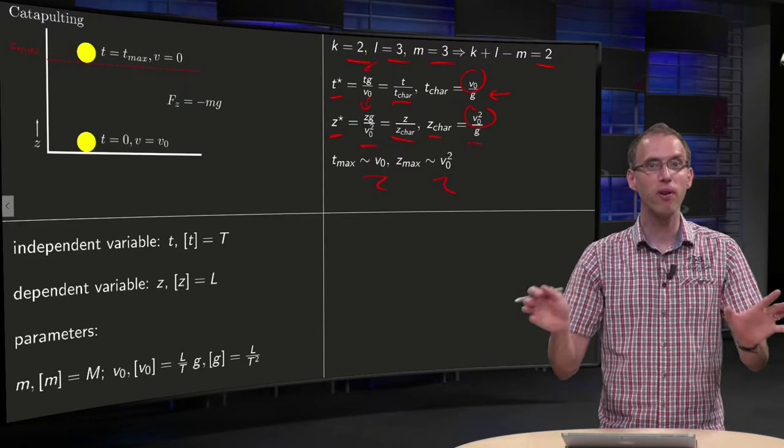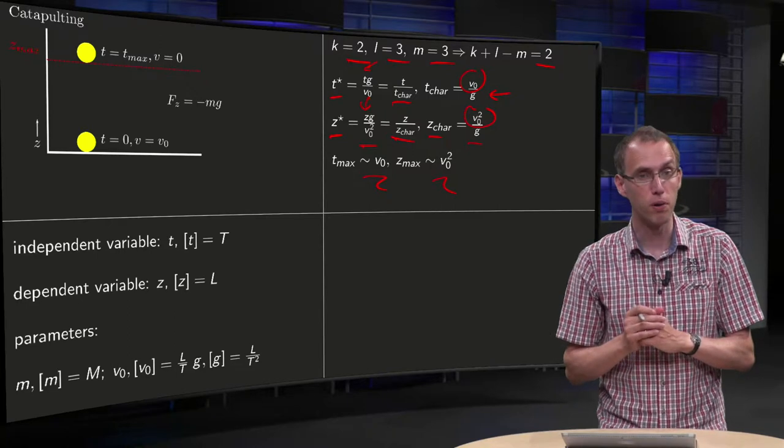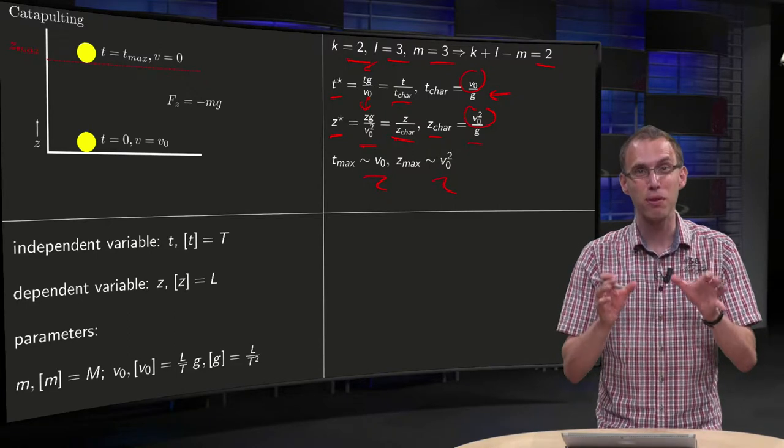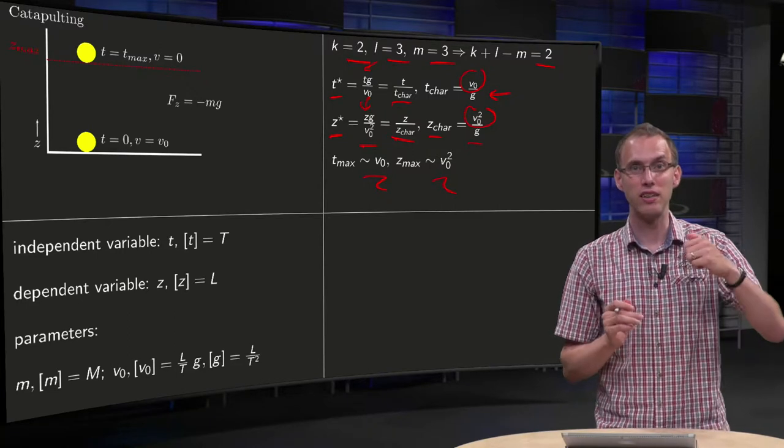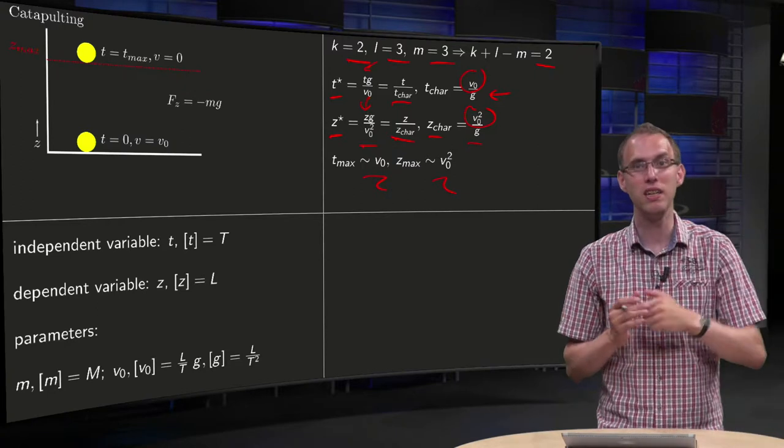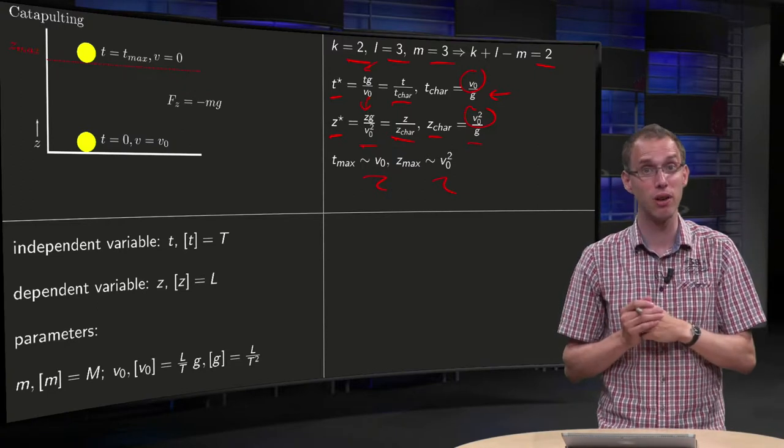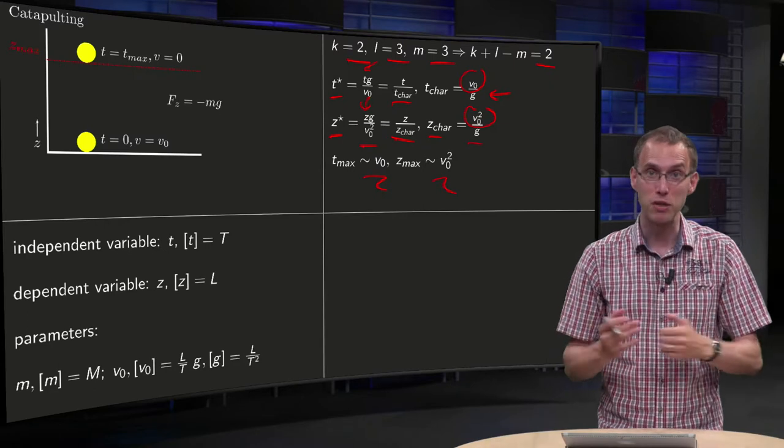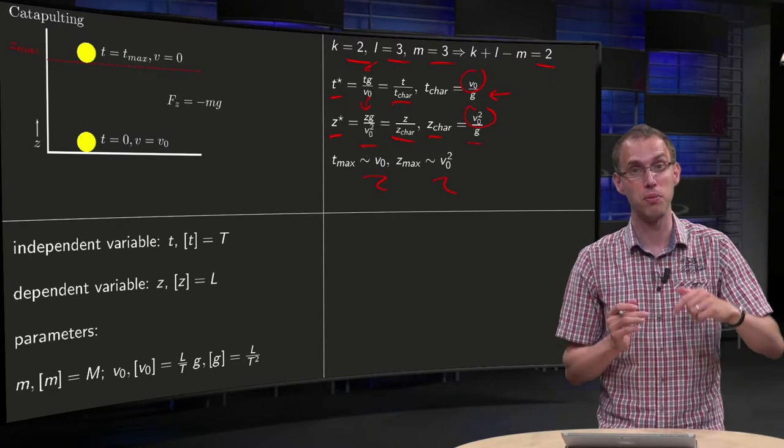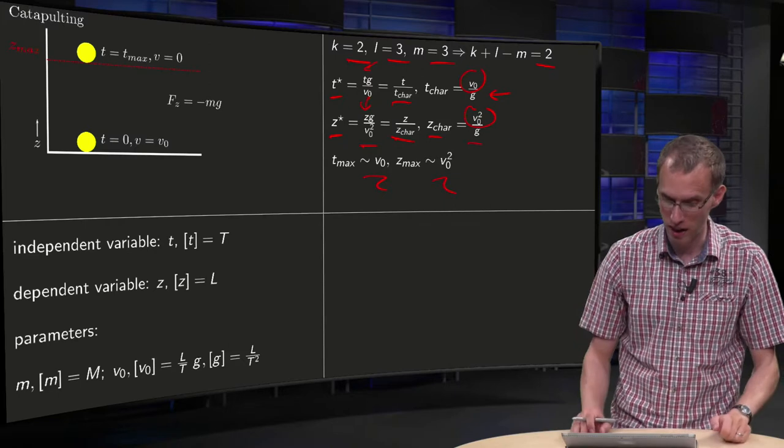So even before solving the problem, you already can see from this dimensional analysis that the time needed to reach the max height will scale like v0, and the maximum height reached will scale like v0 squared.